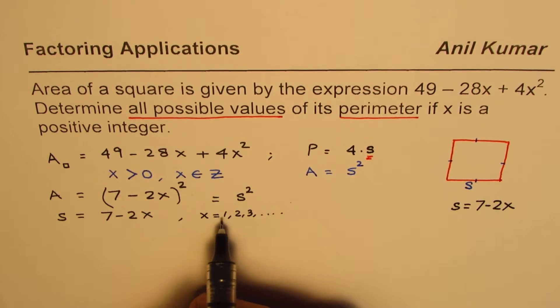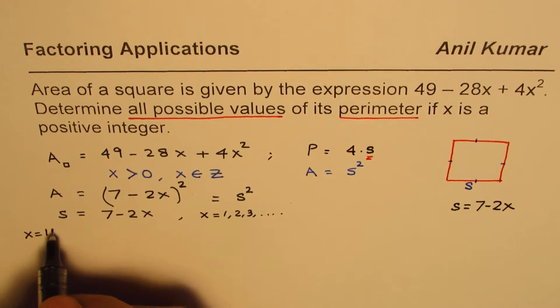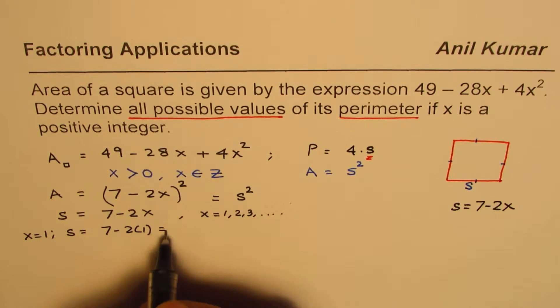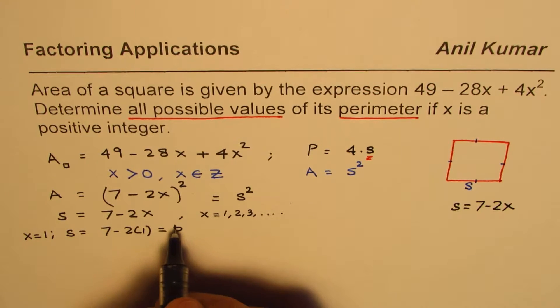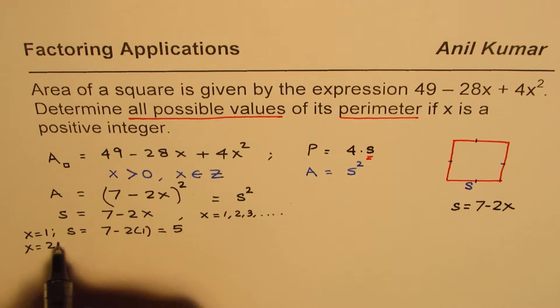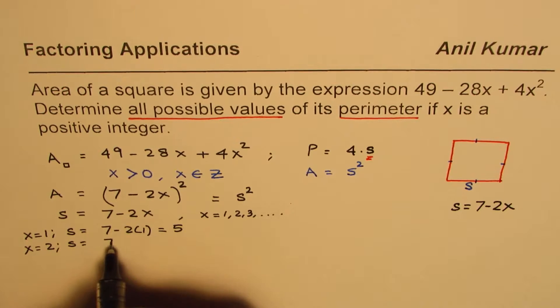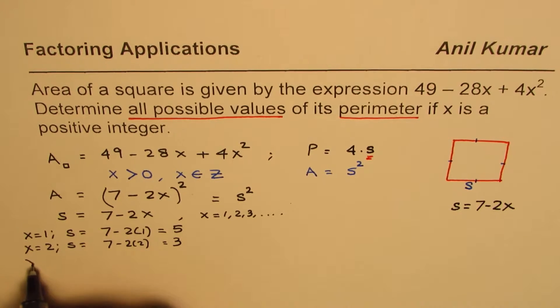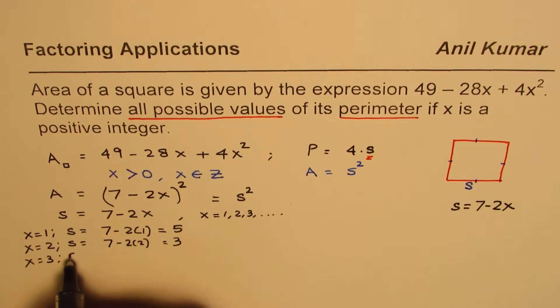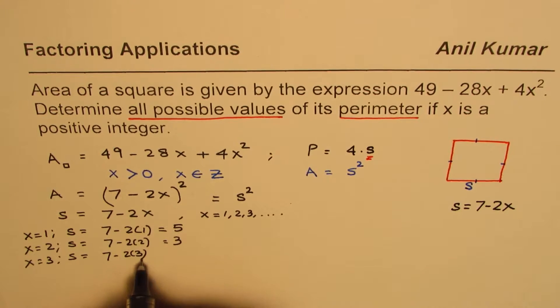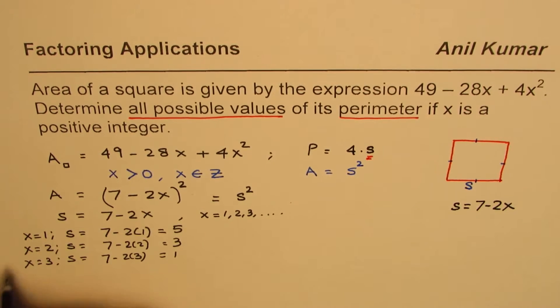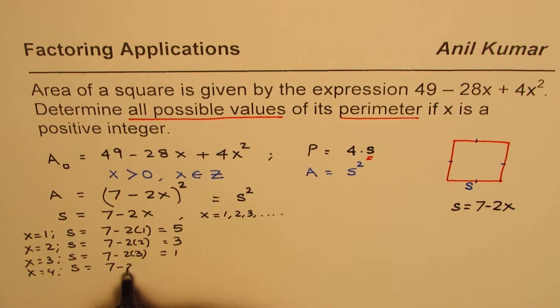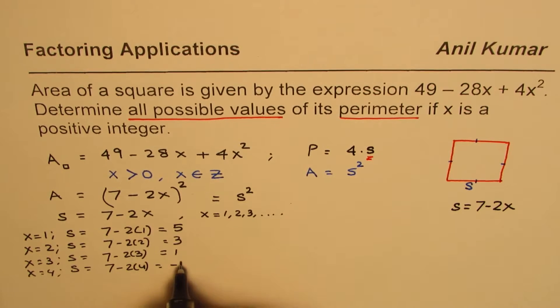If x equals 1, side will be 7 minus 2 times 1, which is 2. 7 minus 2 is 5. If x equals 2, side length will be 7 minus 2 times 2, which is 4. 7 minus 4 is 3. If x equals 3, side length will be 7 minus 2 times 3, which is 6, so it is equal to 1. If x equals 4, side length will be 7 minus 2 times 4, which is 8, which will give you minus 1.